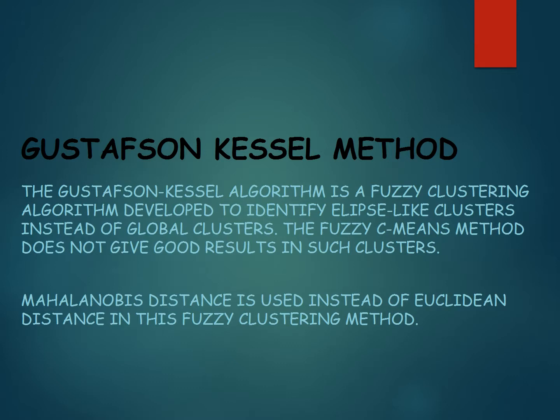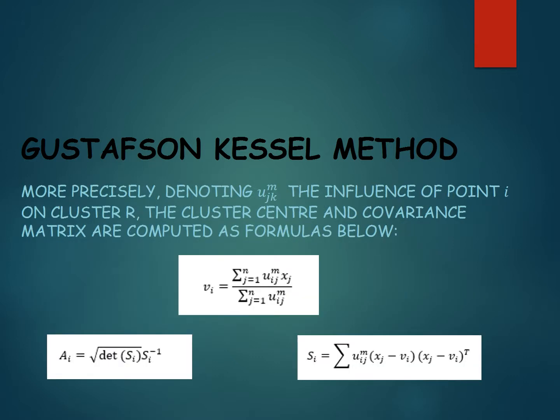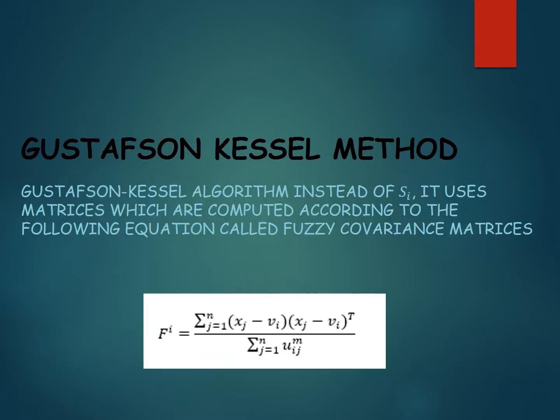The Gustafson-Kessel algorithm is a fuzzy clustering algorithm developed to identify ellipse-like clusters instead of global clusters, where fuzzy C-means does not give good results. Mahalanobis distance is used instead of Euclidean distance in this fuzzy clustering method. Denoting U the influence of point E on cluster R, the cluster center and covariance matrix are computed accordingly. The Gustafson-Kessel algorithm uses fuzzy covariance matrices computed according to a specific equation.